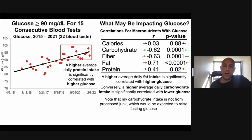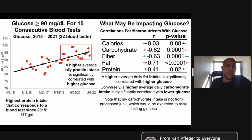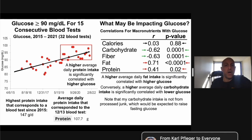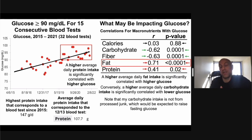A higher average daily protein intake is also significantly correlated with higher glucose. My highest protein intake over the past six and a half years was 147 grams per day, but for this blood test it was about 108 grams per day — already cut by 40 grams. Going forward, cutting it more doesn't make sense. The bigger fish to go after is fat intake.